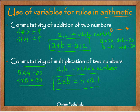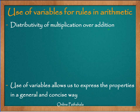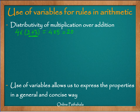Now let us take one more example: distributivity of multiplication over addition. For example, 4 multiplied by (2 + 3) is 4 × 5 = 20. That is one way of solving this — we solve the addition first, then multiply. But can we distribute the multiplication over the addition? That is, 4 × 2 + 4 × 3: 4 times 2 is 8 and 4 times 3 is 12, and when I add I still get 20.